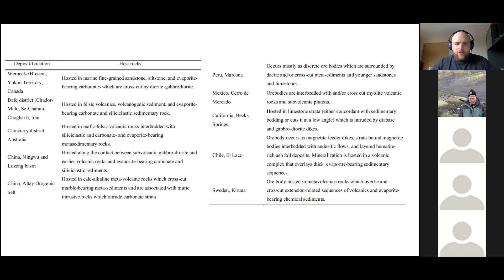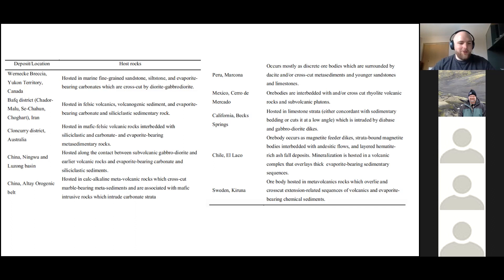Finally, the cross-cutting relationships seen at El Laco, Iron Springs, and Buena Vista are not unusual — they are actually the norm in most IOA systems. I have compiled a list of IOA systems that either have very clear cross-cutting relationships between intrusive rocks and evaporite-bearing sedimentary sequences, or have direct evidence for assimilation of carbonate and evaporite-bearing sedimentary rocks. It will be very interesting to examine ore-stage mineralogy from these systems to evaluate whether similar evidence can be found. IOA systems are unusual rocks, and I feel that this unusual model fits together well. Thank you.